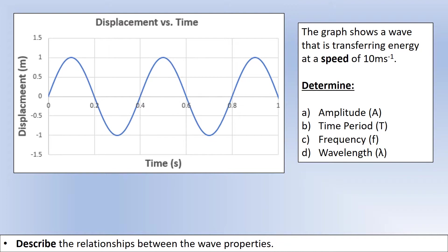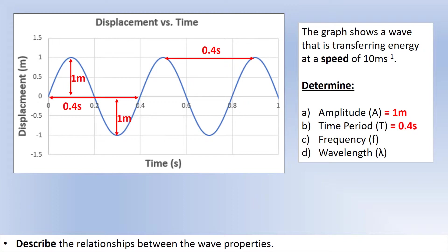Let's take a look at the answers. The first two can be measured from the wave. For amplitude, we measure from the center line to either a peak or a trough, giving us one meter. Because we have a displacement versus time graph, the distance between identical points gives us the time period. Measuring between two clear equivalent points gives a time period of 0.4 seconds.